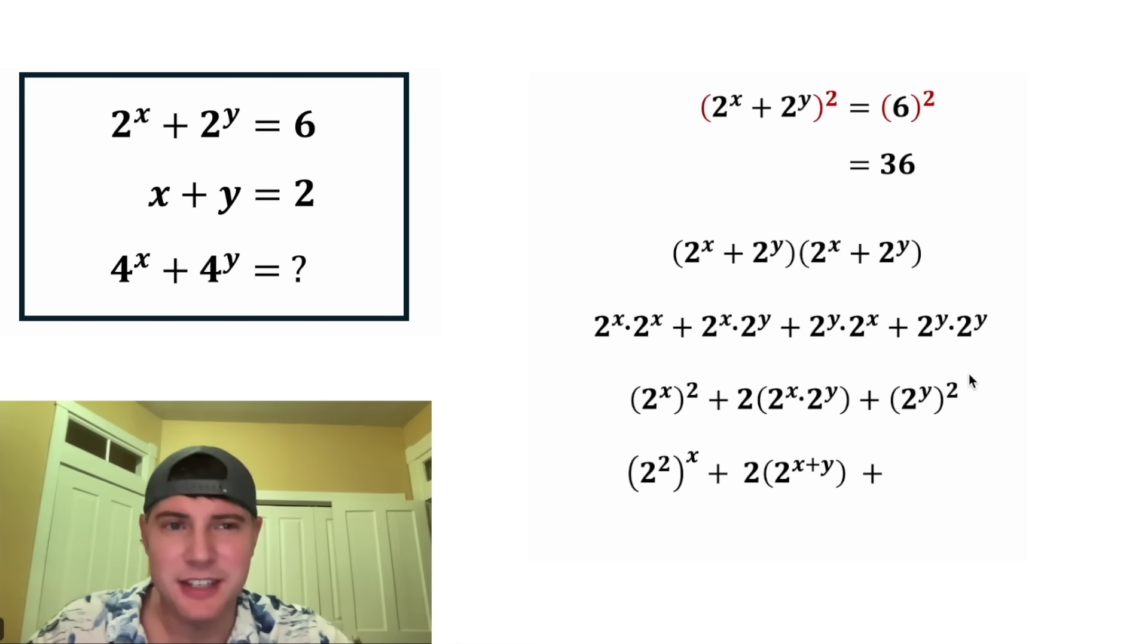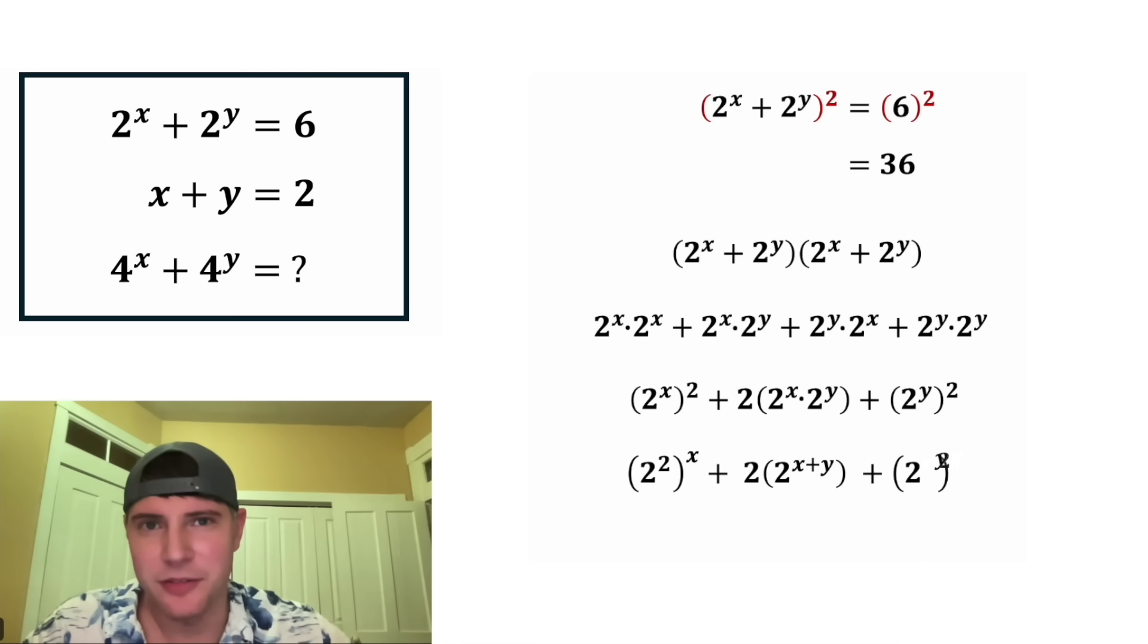And then for the third one, same thing. These exponents are going to multiply, so we can just swap them. It'd be 2 squared to the y, which is the same thing as 2 to the y squared and vice versa.